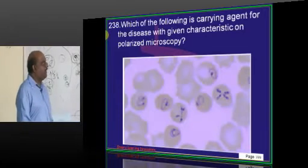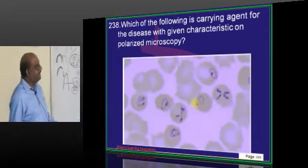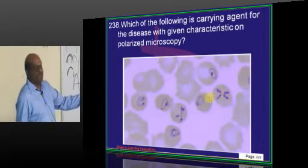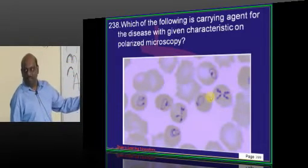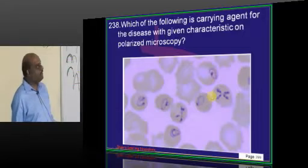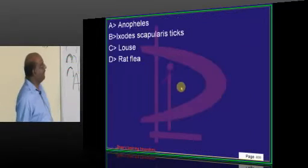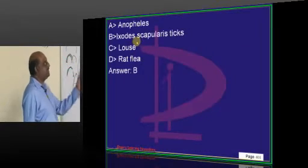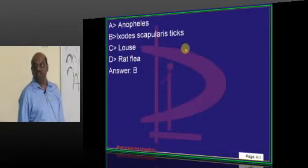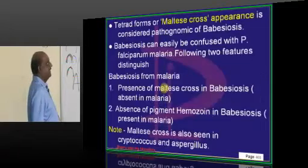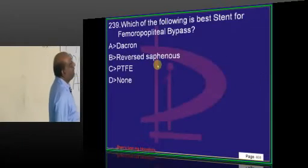This is called Maltese cross appearance, which is typically seen in Babesiosis. Babesiosis is transmitted by the Ixodes tick — that is what you need to remember.